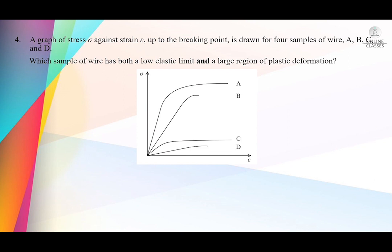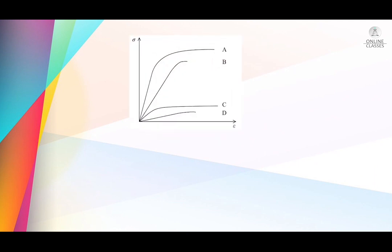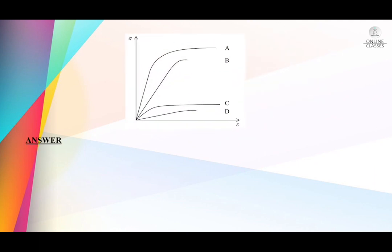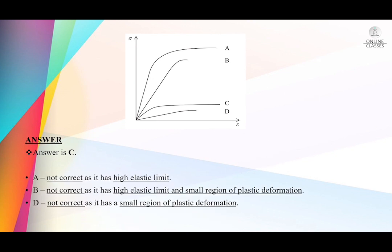Low elastic limit applies to samples C and D, but we cannot take D because D has less plastic deformation whereas C has more plastic deformation. So the answer is C. A is not correct because it has a high elastic limit. B is not correct — it has a high elastic limit and a small region of plastic deformation. D is not correct because it has small plastic deformation.